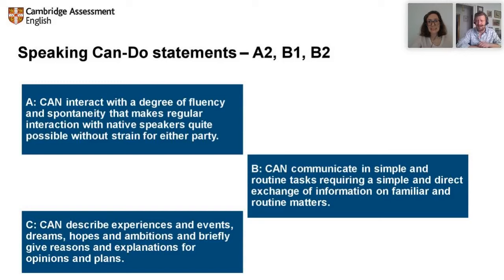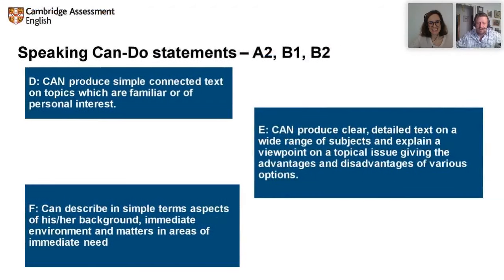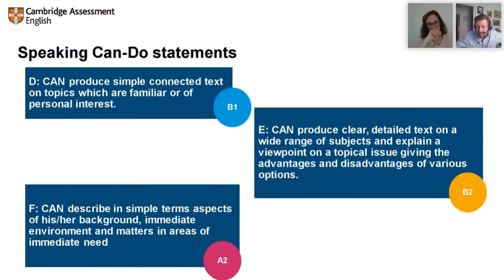Somebody just asked about validity and reliability. Making sure that the input and structure of the test is the same for all candidates, and using the same criteria, can help ensure validity and reliability. The answers: A — 'can interact with a degree of fluency and spontaneity that makes regular interaction with native speakers quite possible without strain for either party' — that's B2. Then B1 and A2 for the others.